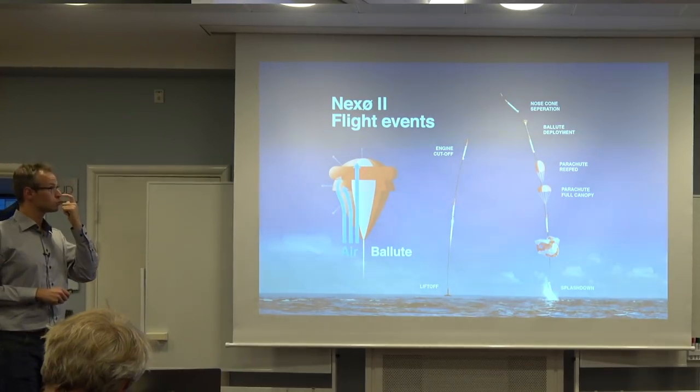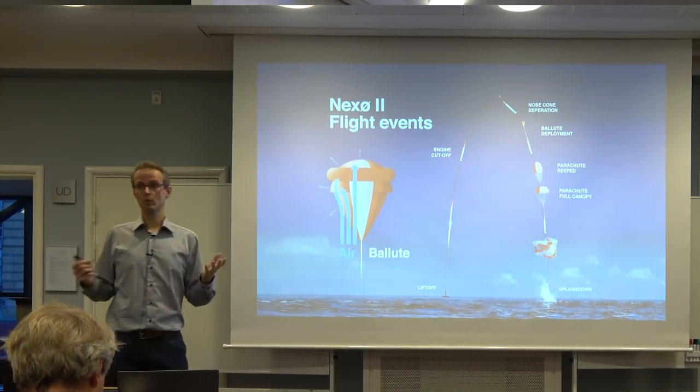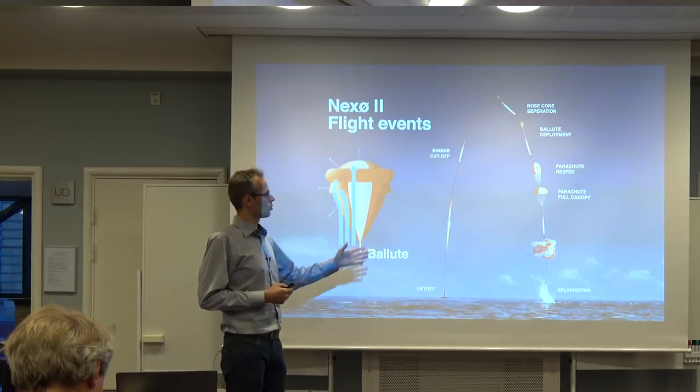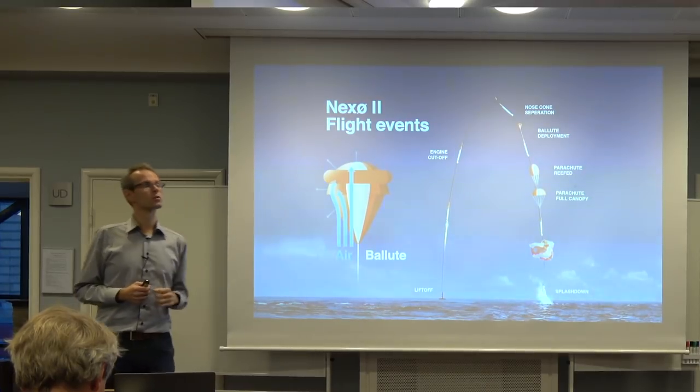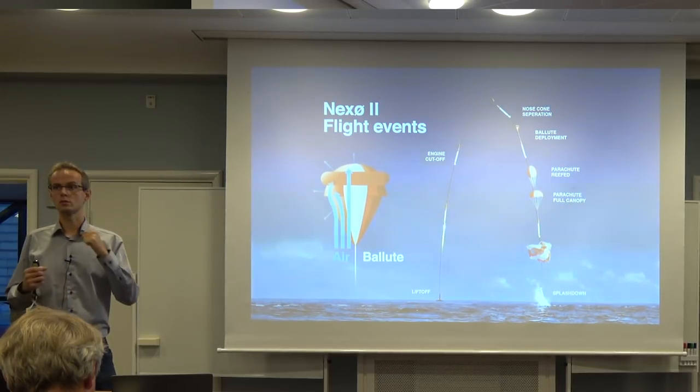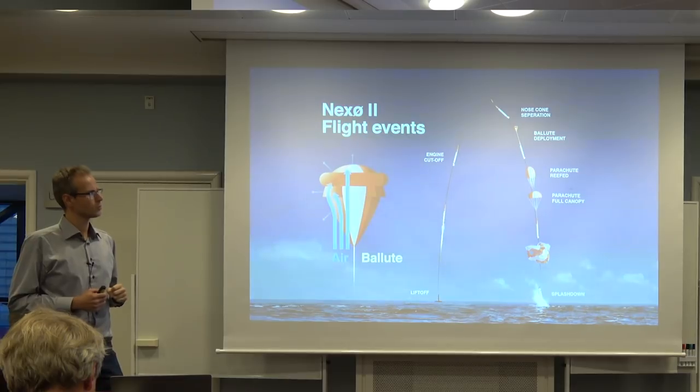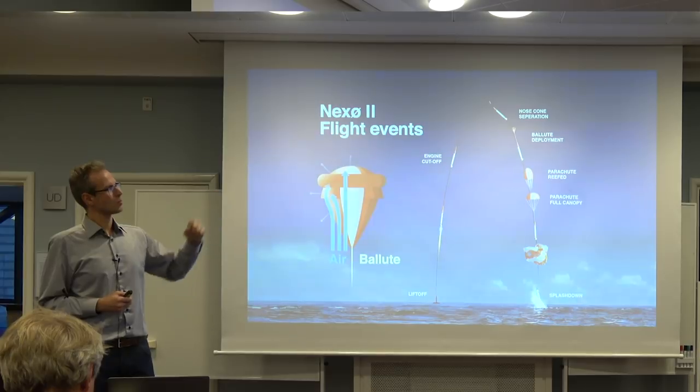So now the Nexo 2 flight events, very simple, just like what we want to do with our astronauts one day. Rocket lifts off. Engine cutoff should be after about 45 seconds. It should coast to apogee. Nose cone is deployed with a gas generator, a small explosion, and then the balloon pops out, a parachute. When it descends below 3000 meters, the computer will deploy the parachute and then it will land. Very simple flight events.